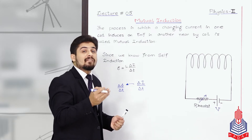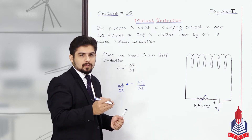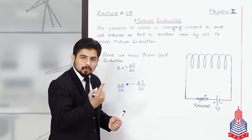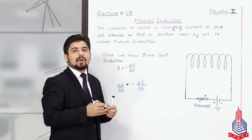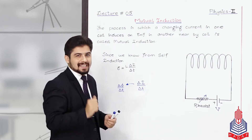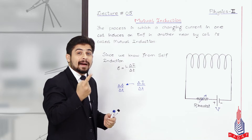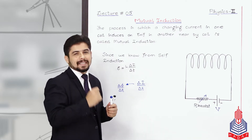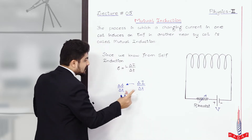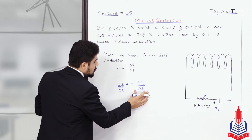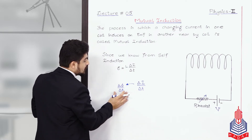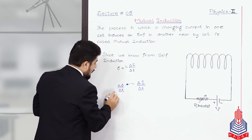But if it is a variable current, then the magnetic field will also vary and the magnetic flux will vary. So, dear students, changing current with the passage of time will give rise to changing magnetic flux with the passage of time.